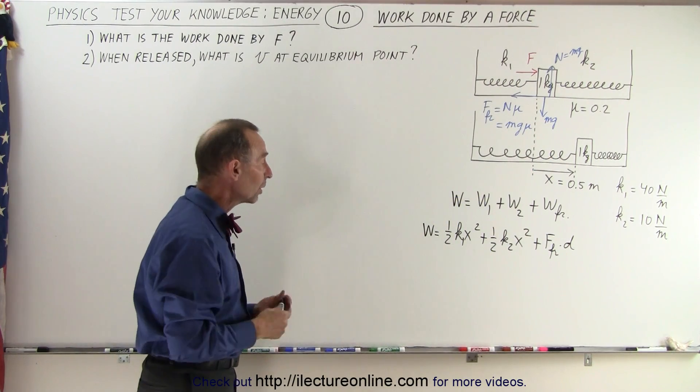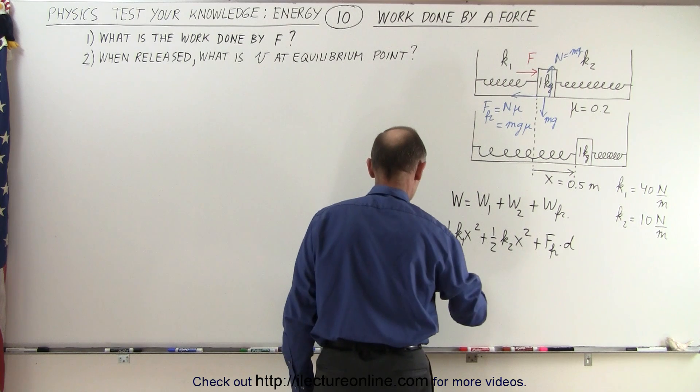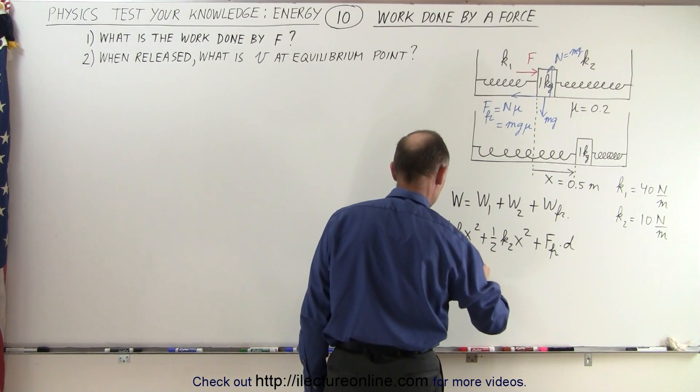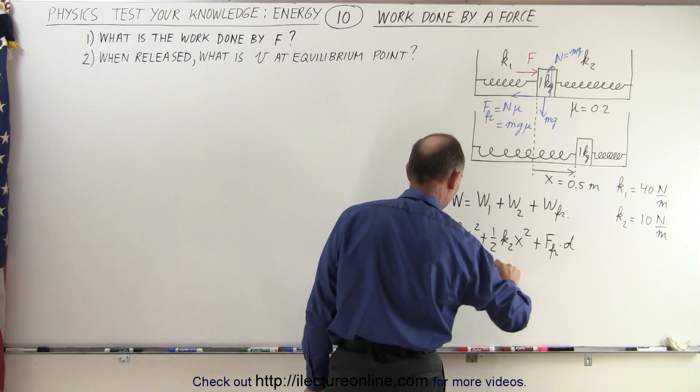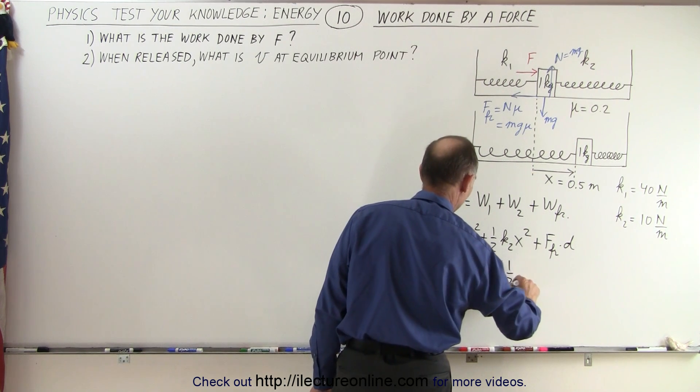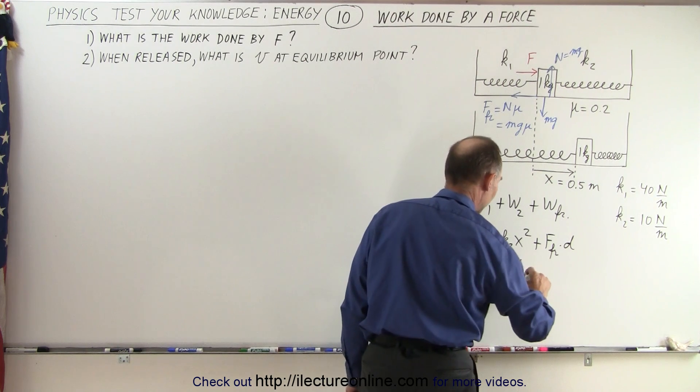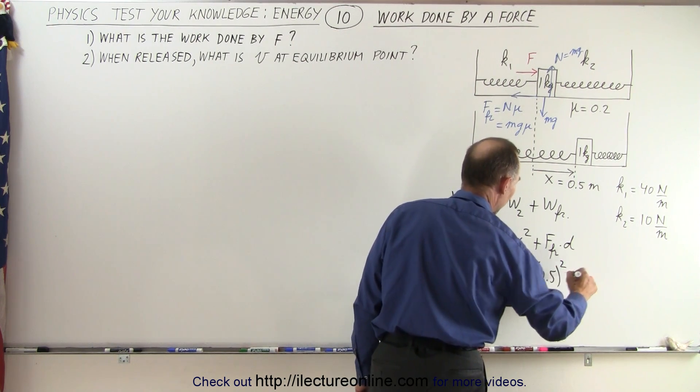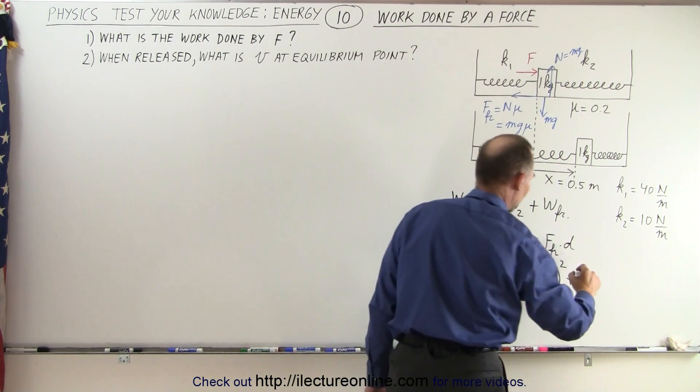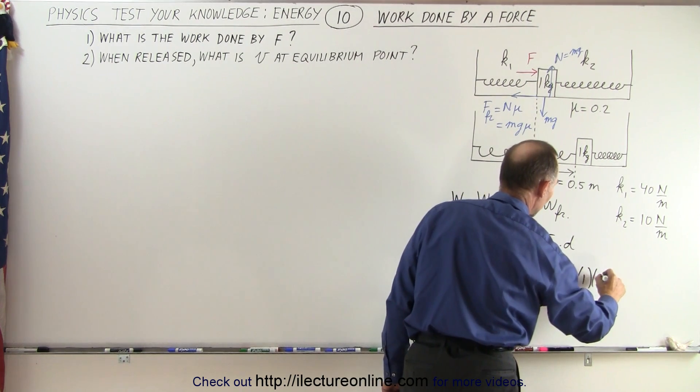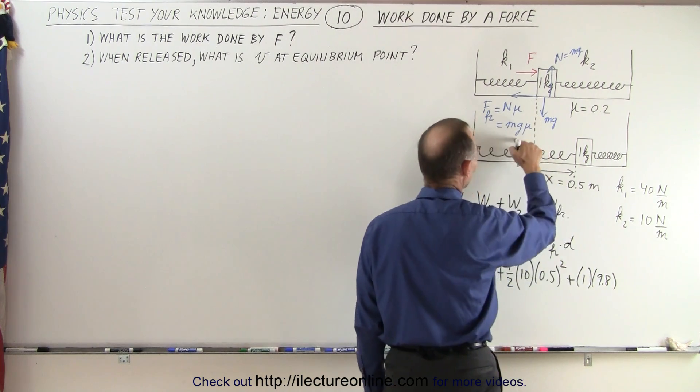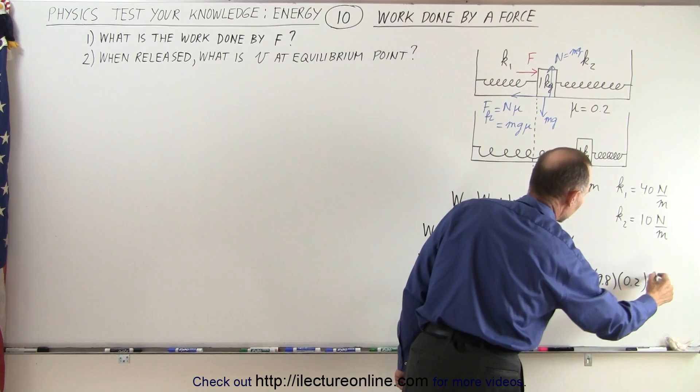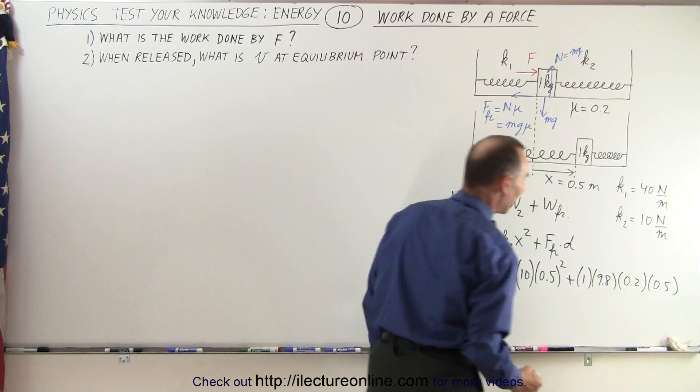Plugging all that into the equation, the work done is equal to one half times k1 which is 40 times x which is 0.5 squared, plus one half k2 which is 10 times the same distance 0.5 squared, plus the friction force which is the mass which is one times g which is 9.8, that's m times g, mu is 0.2, and distance is 0.5.